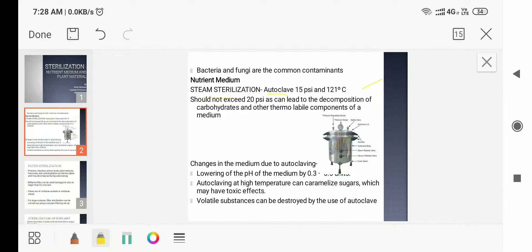If you are using larger volume of culture medium for sterilization, then you can increase the time; otherwise it should be 15 to 20 minutes. Some changes take place during autoclaving. The pH of the medium decreases by 0.3 to 0.5 units, and if we use this media, the growth of the plant material would not be proper. Autoclaving leads to caramelization of sugars, which produces some toxic products. Even volatile substances get affected by autoclaving.